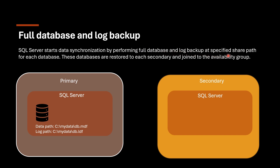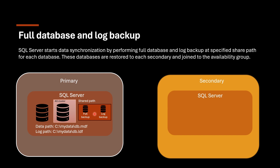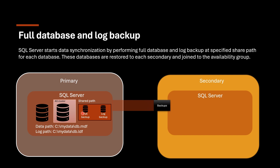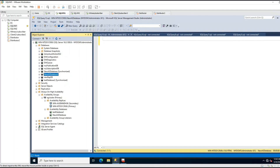Let's switch to another technique: Full Database and Log Backup. If you select this option, SQL Server starts data synchronization by performing full database and log backup at a specified share path for each database. These databases are restored to each secondary and joined to the availability group. As soon as the database is added, SQL Server starts taking full and transaction log backups to the specified shared path. When backup is finished, the backups are transferred from primary to secondary and restored there, then synchronization starts with remaining incremental data. You need to set a shared path for this technique.